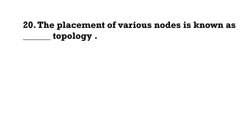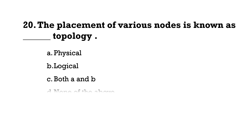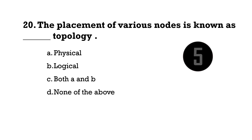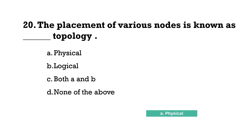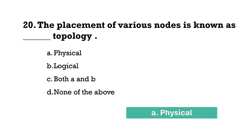The placement of various nodes in a network is known as what type of topology? The answer is physical topology.